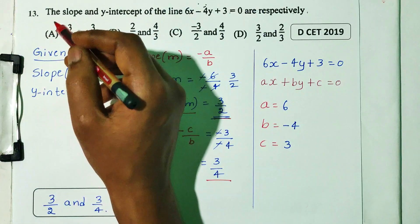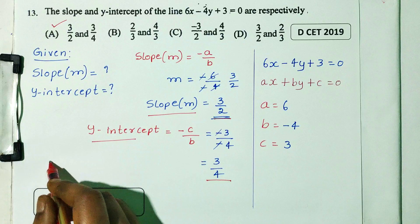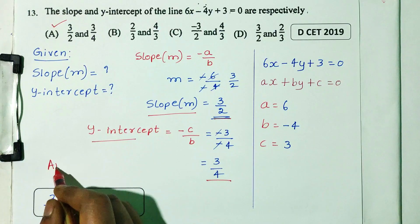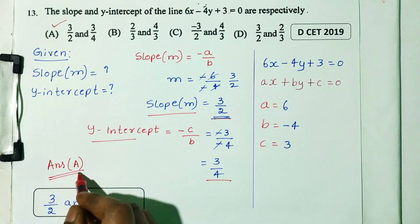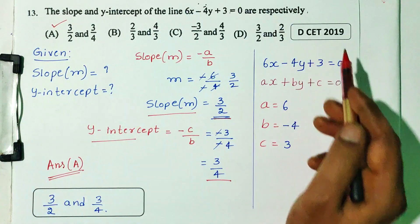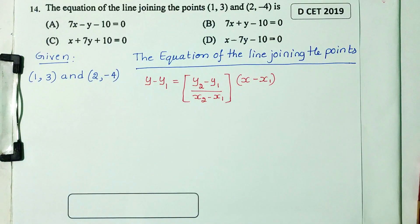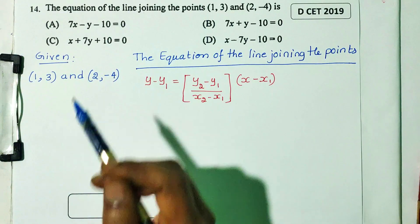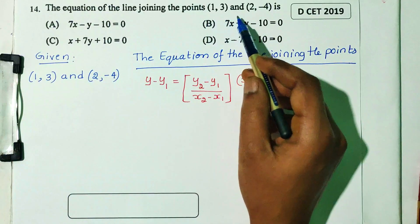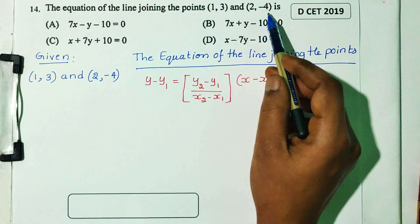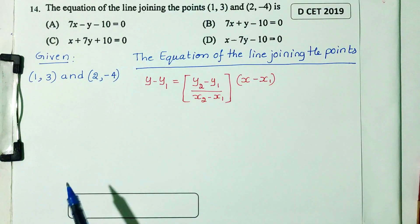The correct option is the answer for DCT 2019. Question number 14: the equation of the line joining the points (1, 3) and (2, -4). DCT 2019 question.